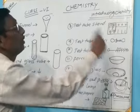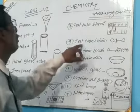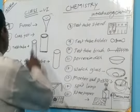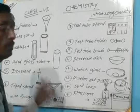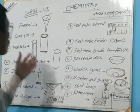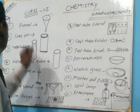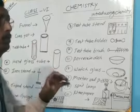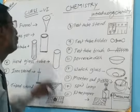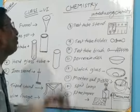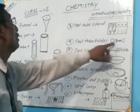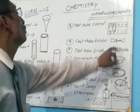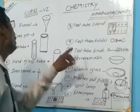Then come on to point nine: test tube holder. What is a test tube holder? A test tube holder is an apparatus which is used to catch the test tube. If a holder is not present in the laboratory, we use paper, but during heating, fire can catch it and our hand can become injured. So we cannot work easily. This holder helps us to hold the test tube easily. So it is also an important apparatus.